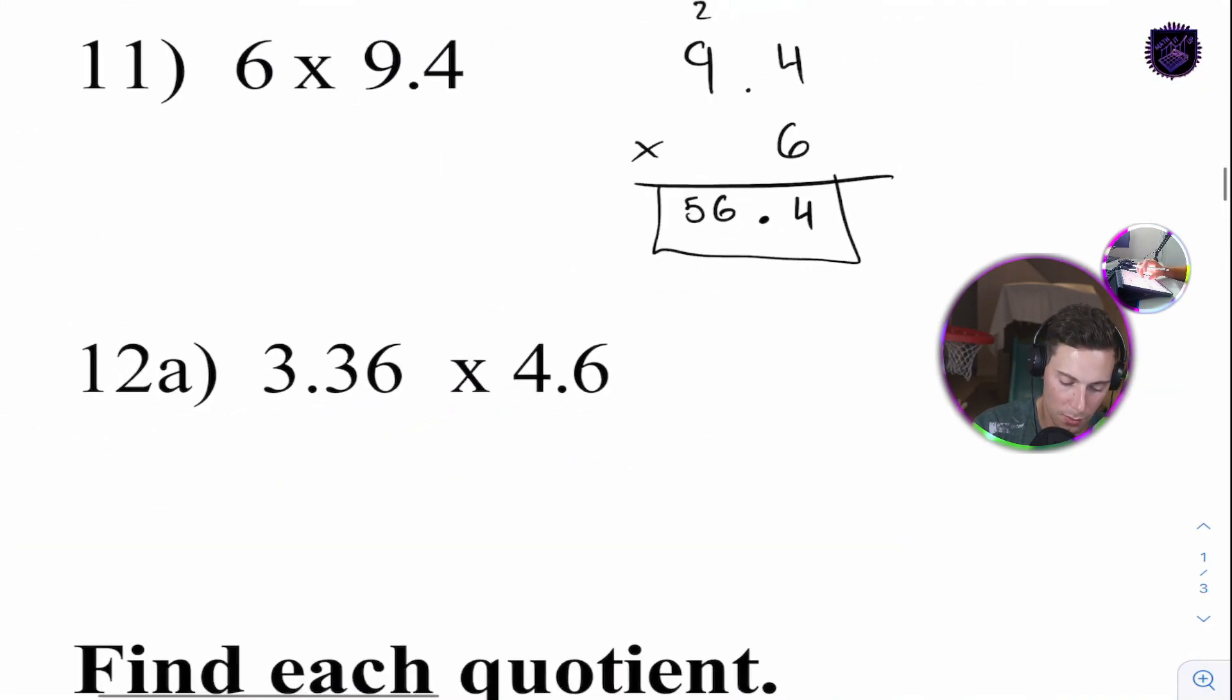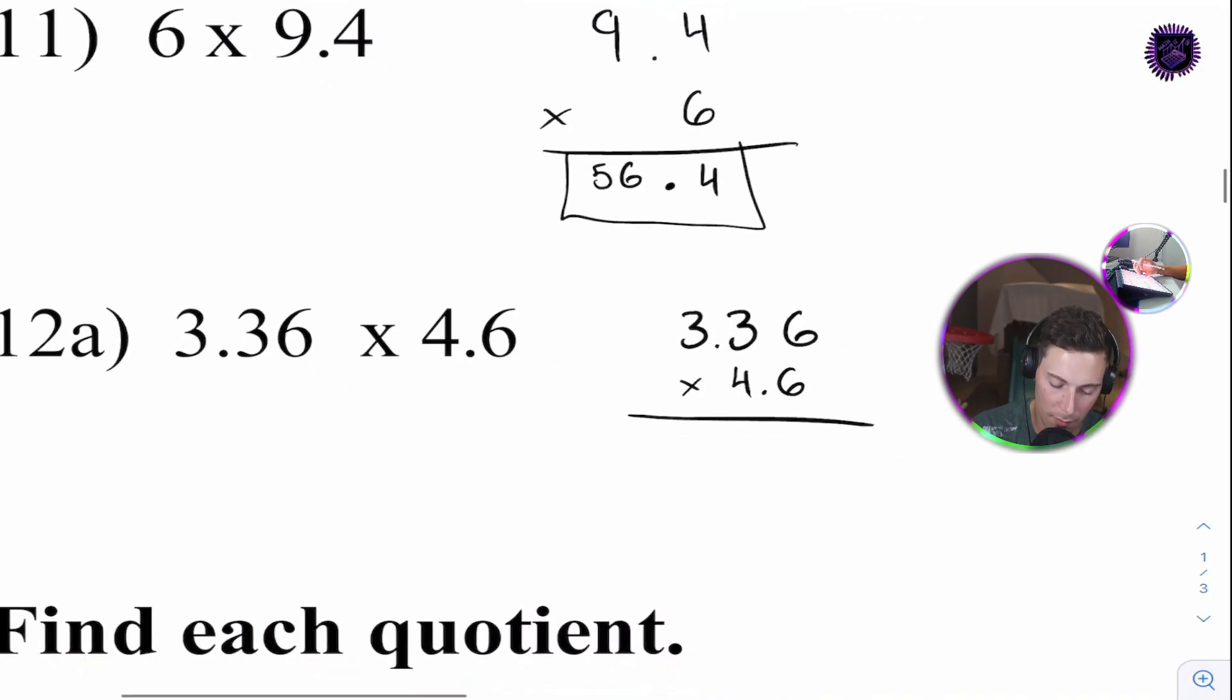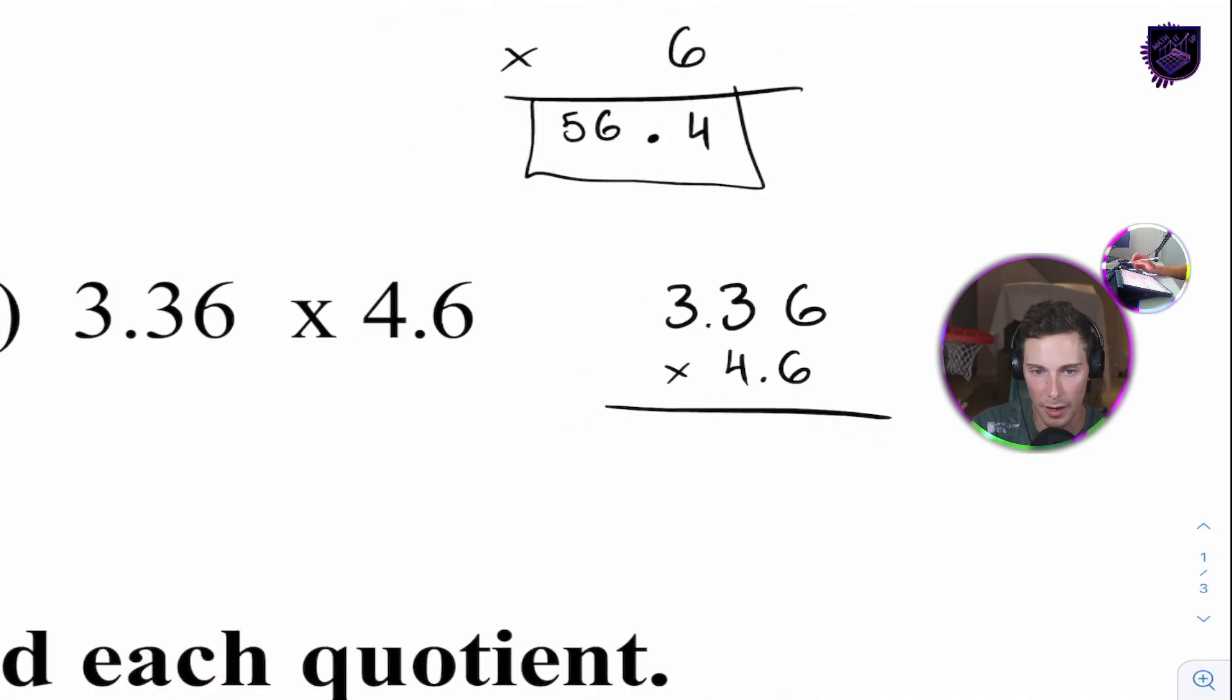4.5 multiplied by 7. Always. Just so much easier to put the bigger number, the one with more digits on top, put the smaller number on the bottom. Bigger number on top, smaller number on the bottom. Okay. 7 times 5 is 35. Put the 5. Carry the 3. 7 times 4 is 28. Plus 3 is 31. How many numbers fall behind a decimal? 1. We're going to move our decimal place over 1. So, here. 31.5.